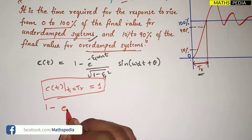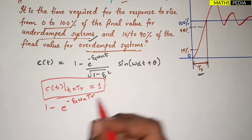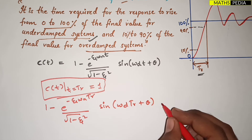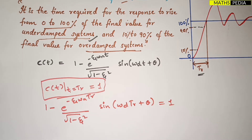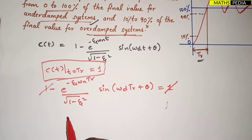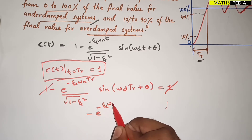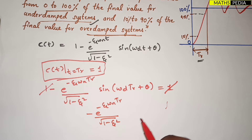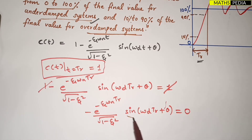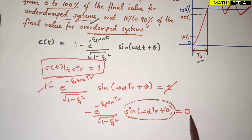Substituting t = T_r: 1 minus e^(−ζωₙT_r) divided by √(1 − ζ²) times sin(ωd·T_r + θ) = 1. The 1 on the left and the 1 on the right cancel, leaving: minus e^(−ζωₙT_r) divided by √(1 − ζ²) times sin(ωd·T_r + θ) = 0. For this equation to be satisfied, sin(ωd·T_r + θ) must equal 0.